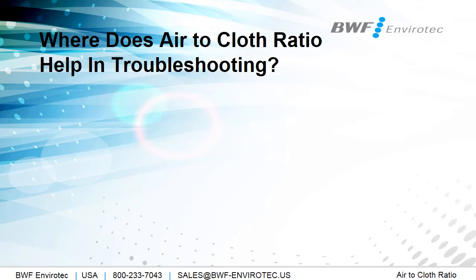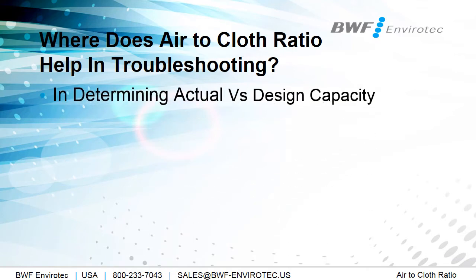Where does air-to-cloth ratio help in troubleshooting? The first place is in determining the actual versus the design capacity of the system. If you walk up to a dust collector and know nothing about it except the number of bags and the actual airflow going through it, and you have the OEM manual, you can at least see how far above or below you are from the design capacity. For instance, if the air-to-cloth ratio is supposed to be 3, but your calculation shows it's 5 to 1, you automatically know you're trying to pull more air through that system than it was designed for, and this is going to lead to other issues.